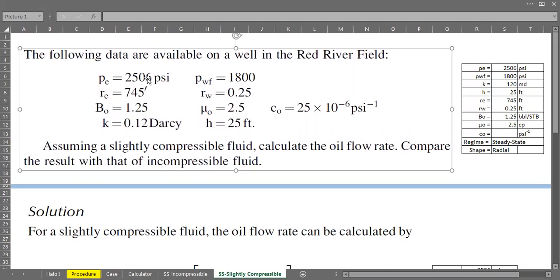The following data are available on a well in the Red River Field. So we have the external pressure, flowing bottom hole pressure, and drainage radius, wellbore radius, oil formation volume factor, oil viscosity, oil compressibility, permeability in Darcy, and net pay thickness. So assuming a slightly compressible fluid, we need to calculate the oil flow rate. And we then will compare the result with that of incompressible fluid.